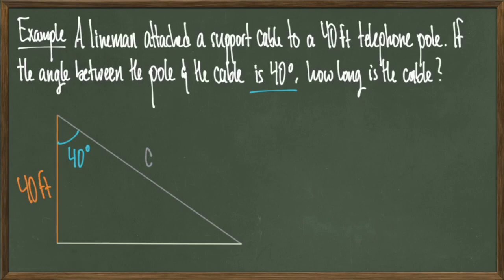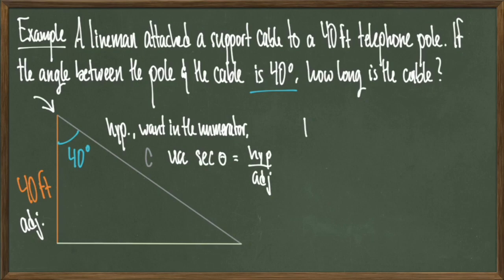So to bring all this together, we realize that we have an adjacent side and a hypotenuse with respect to our angle. This tells us that we should be using either cosine of 40 degrees or secant of 40 degrees. However, secant is a more efficient trig ratio here because it puts the hypotenuse, c, in the numerator. So when we calculate secant of 40 degrees, we see that that's equal to hypotenuse over adjacent. And this means that secant of 40 degrees is equal to c over 40 feet.